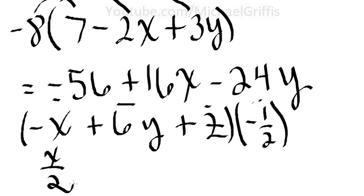Negative half times 6 is minus, a half of 6 is 3y, and negative half times z is negative z over 2.